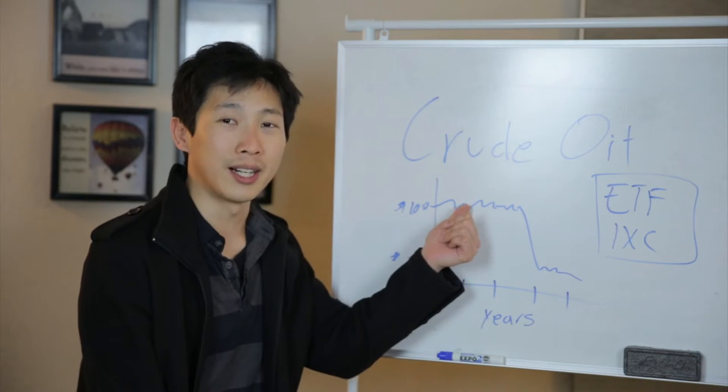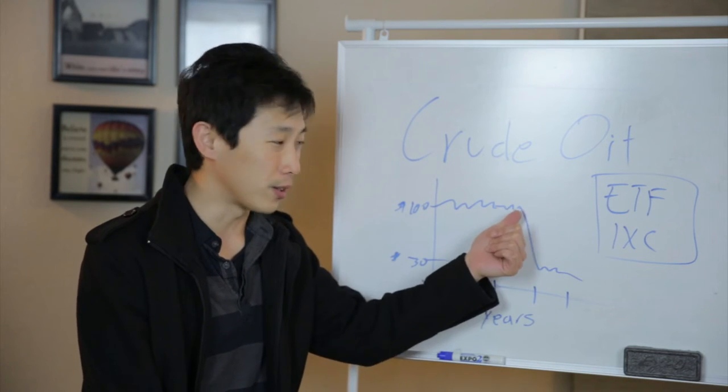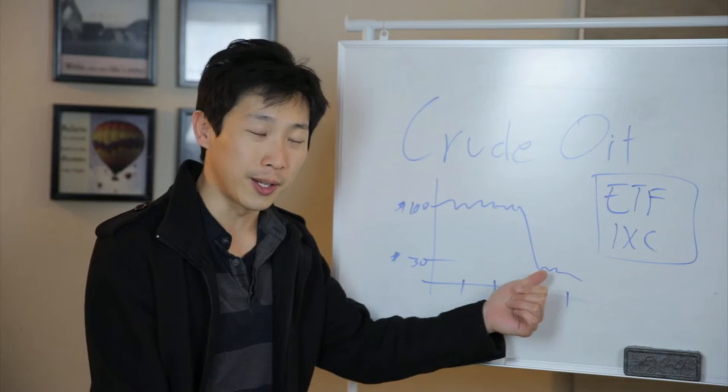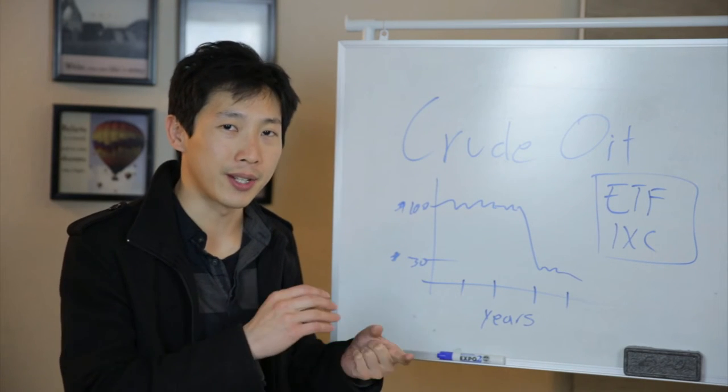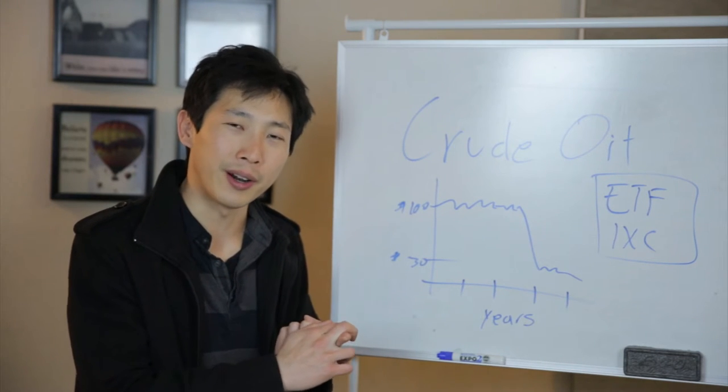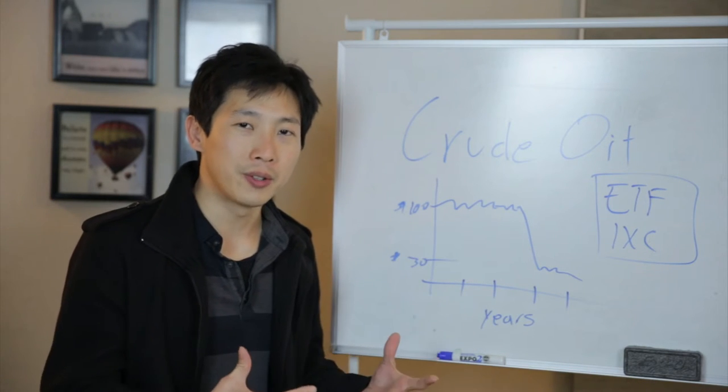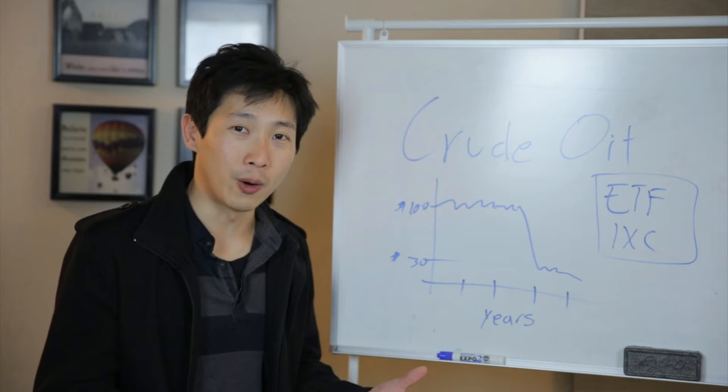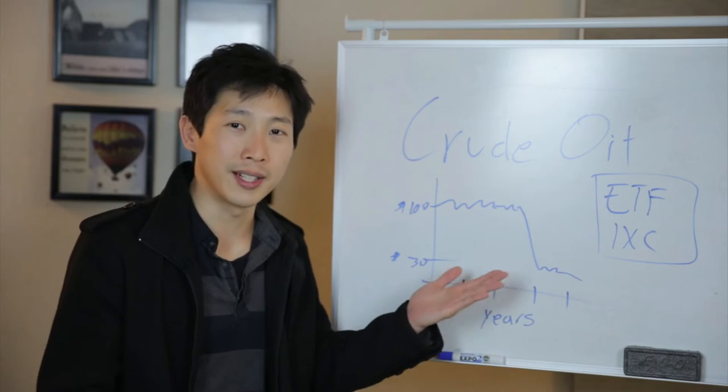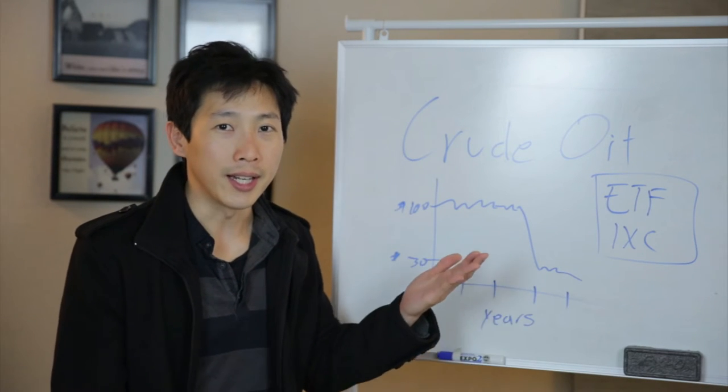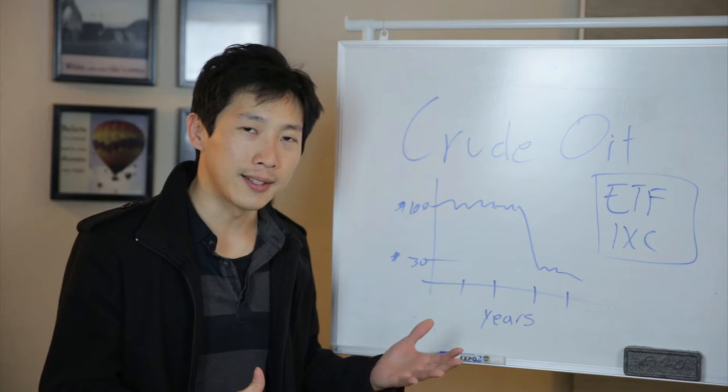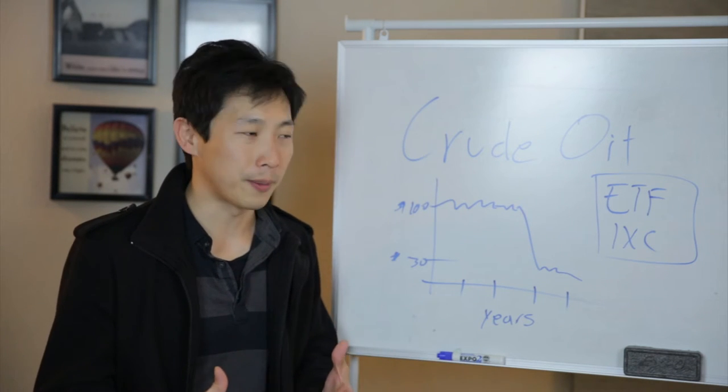Crude oil was hovering around a hundred dollars a barrel and now it dropped all the way down to $30. One of the major factors is that the US is doing this hydraulic fracking thing where in a really long time the United States hasn't really produced any oil for a really long time and all of sudden it's pumping all this oil into the market and it's essentially oversupplying the market.